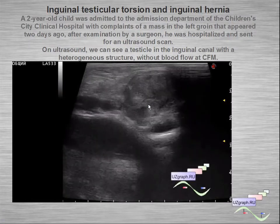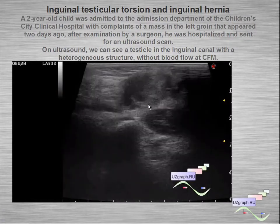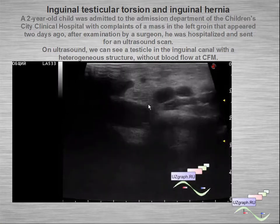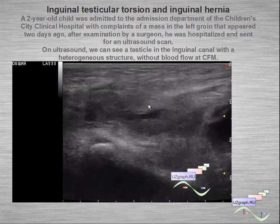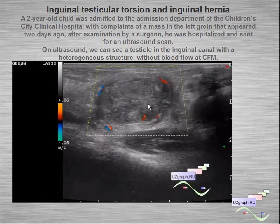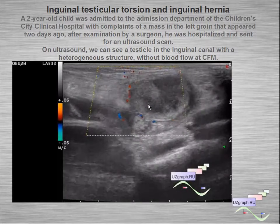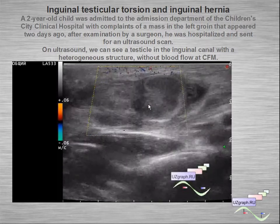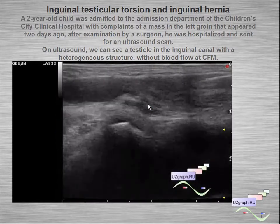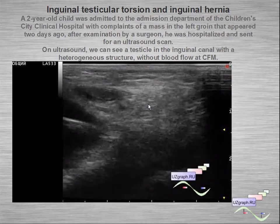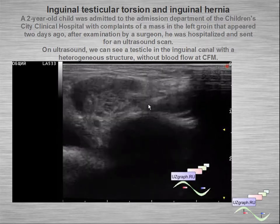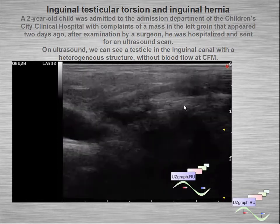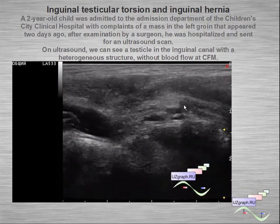Next case: inguinal testicular torsion and inguinal hernia. A young child in the children's city hospital presented with complaints of a mass in the left groin that appeared two days prior; after examination by a surgeon he was hospitalized and sent for ultrasound. On ultrasound we can see a testicle in the inguinal canal with a heterogeneous structure and without blood flow on color flow mode.